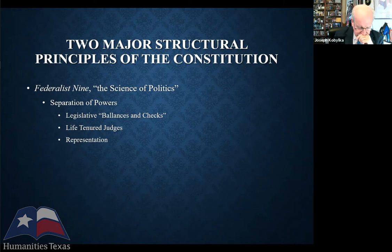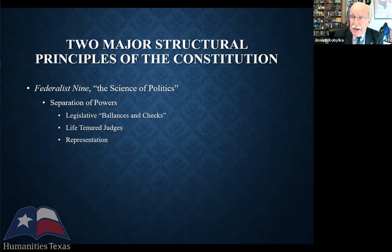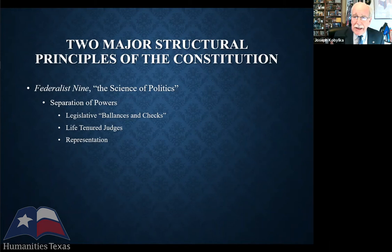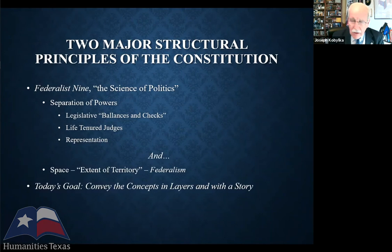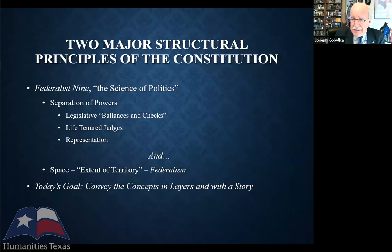Rights and liberties really come in later, and Kevin, Carol, and Alex will be talking about those. We're talking about the structural things: separation of powers, legislative checks and balances, life-tenured judges, representation. All of this flows from Federalist No. 9 and what Hamilton called the science of politics. The Federalists add one more principle to that catalog: space, or the extent of territory — what we call federalism. Today I'd like to convey these concepts in layers and with a story.